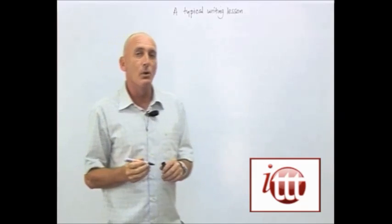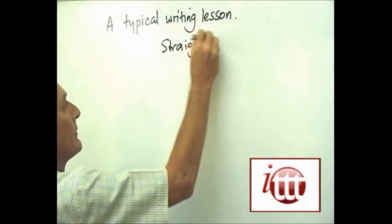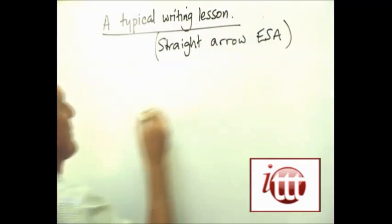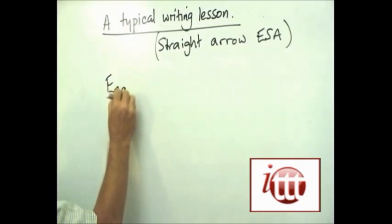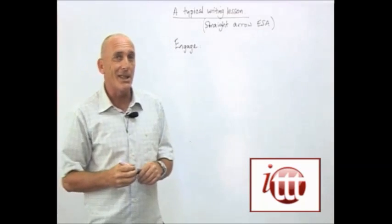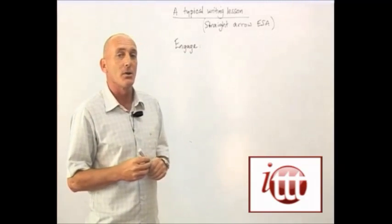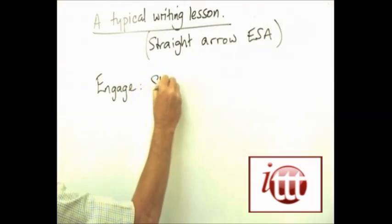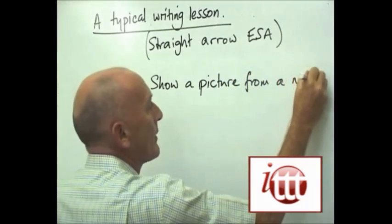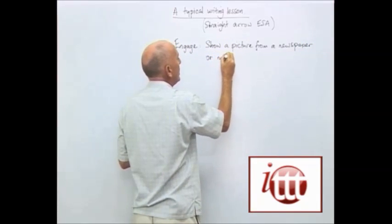Again, we're going to use the format of a straight-arrow ESA lesson. Our first stage is to go through the engaged stage, and if we think back to what we said before, what we need to do is to try to generate interest. So, an example here could be a picture.